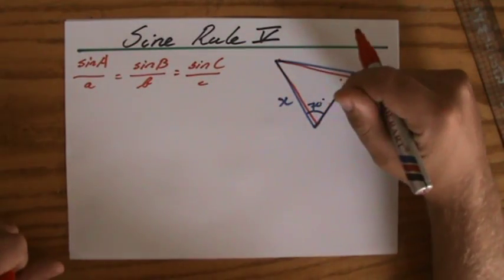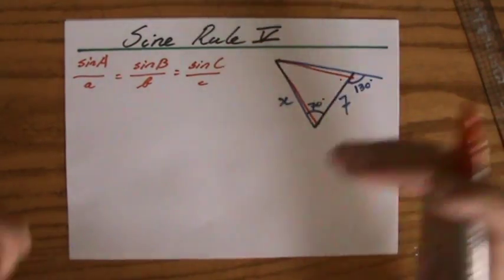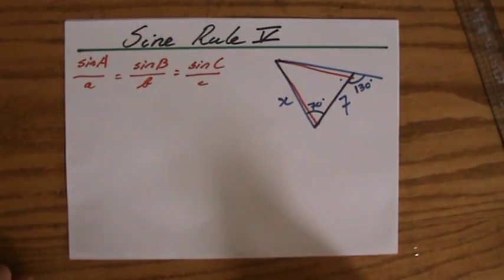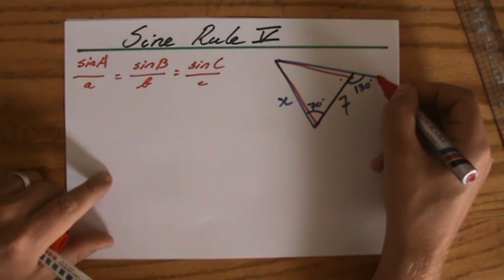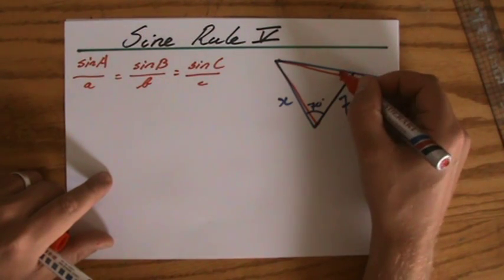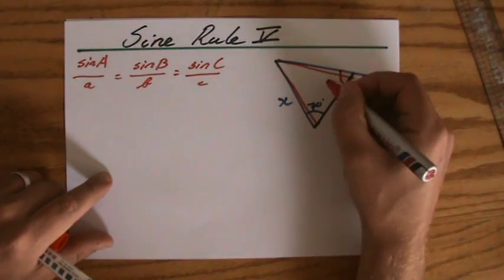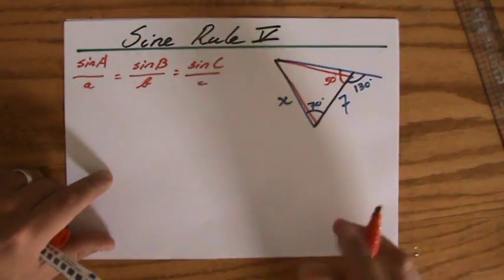So is it therefore impossible to answer this question? No, of course not, because they give me more information. Angle on a straight line, 180 degrees, that is 130, that makes this angle 50 degrees. Agree?